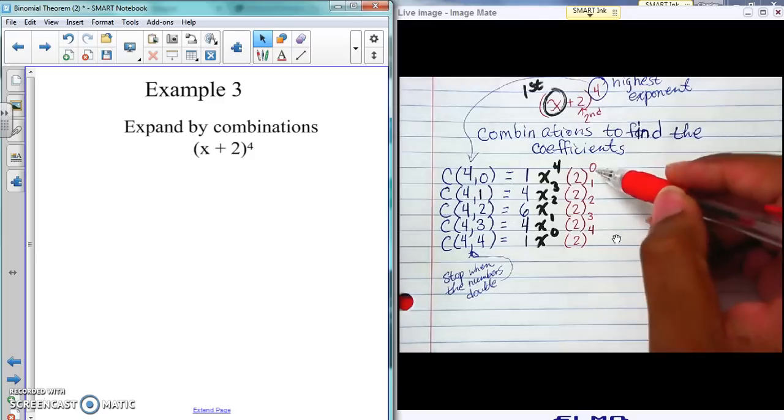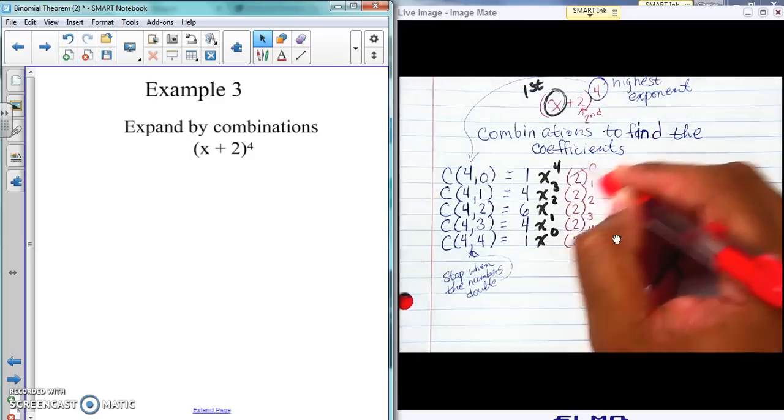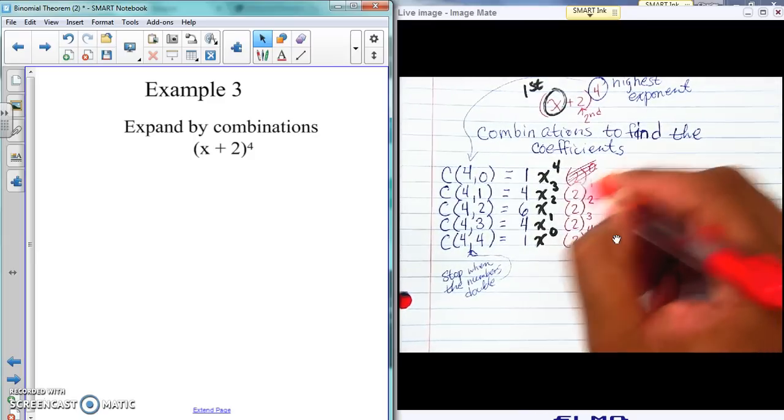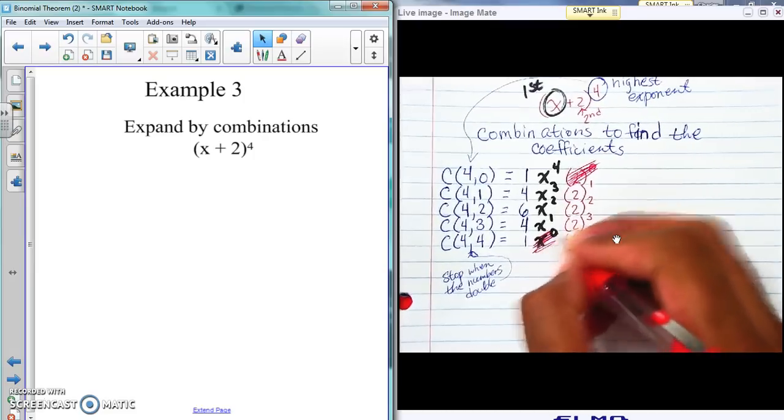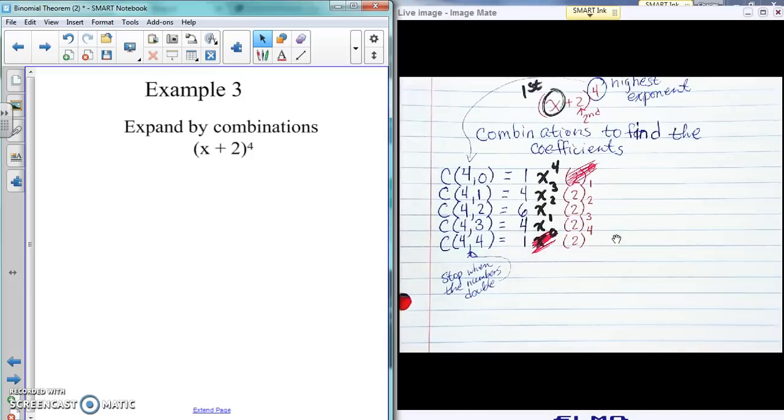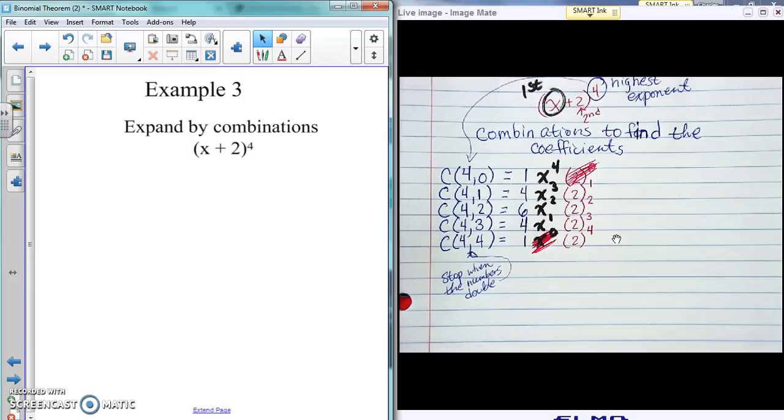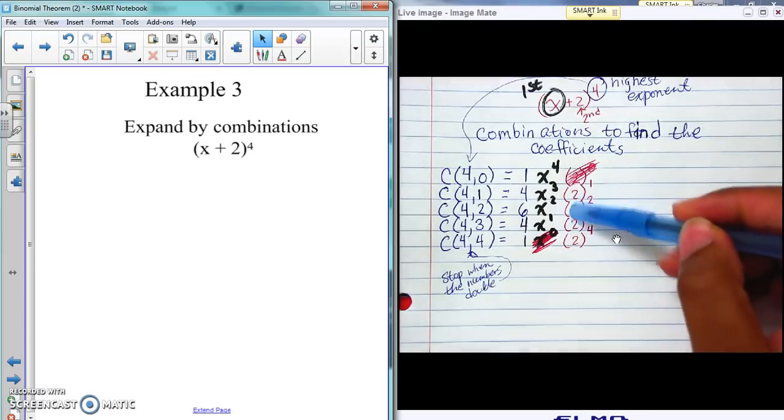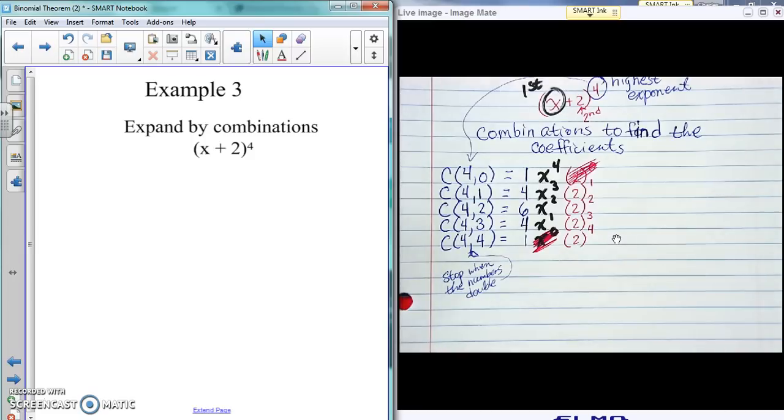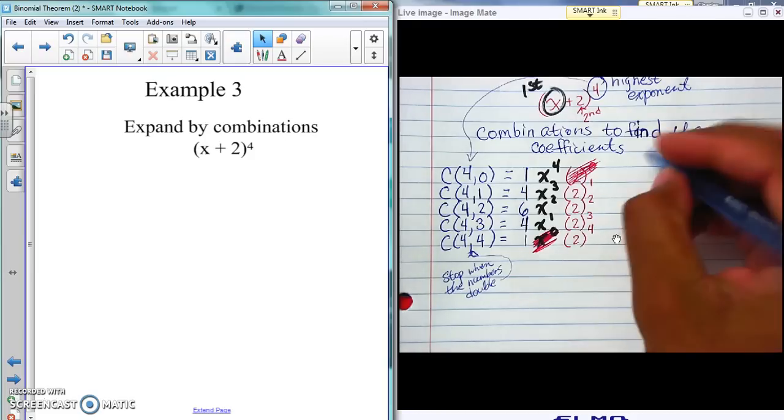So the next thing is we can get rid of anything to the zero power. So we get rid of these. And before we can just say, let's go ahead and write it out, because we have a number right here, we have to work those out. And those are simple, easy to do. That's not hard. Two to the one power is two, two squared is four, two to the third power is eight, two to the fourth power is 16. That's not hard.